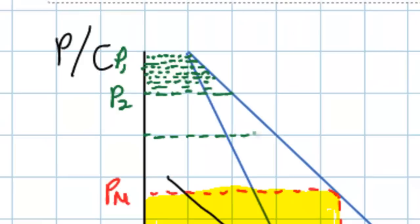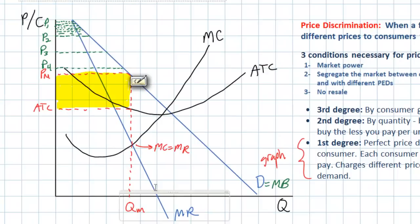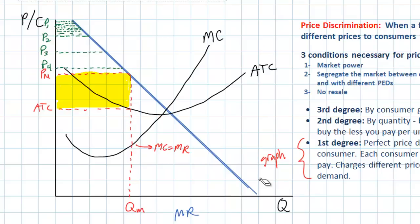As we work down the demand curve, the monopolist continues to charge lower prices to additional consumers. What's actually happening is that the marginal revenue the monopolist earns becomes the price it sells each additional unit for. So the effect of perfect price discrimination is that marginal revenue equals the price charged to each additional consumer — meaning the demand curve also represents the marginal revenue curve. Marginal revenue refers to the revenue earned from the sale of one additional unit.